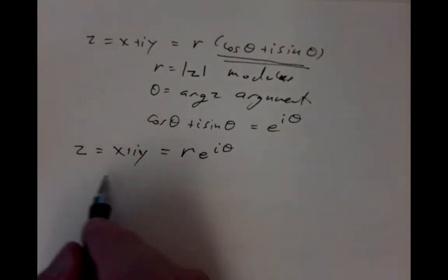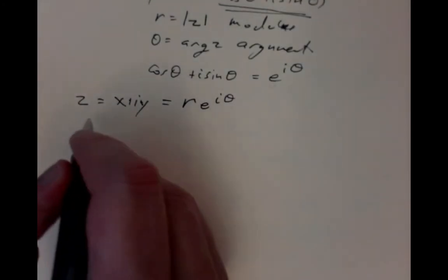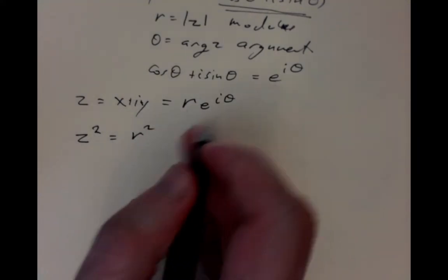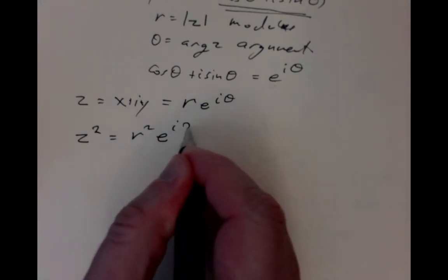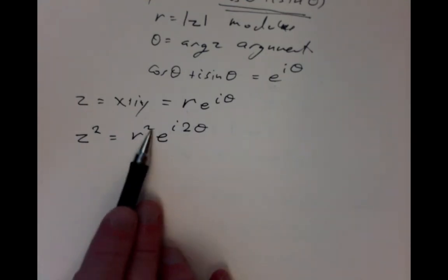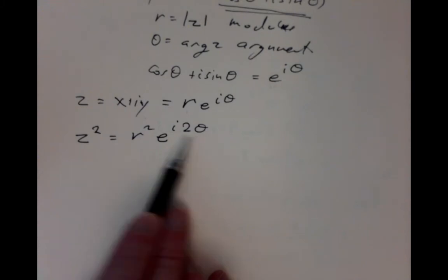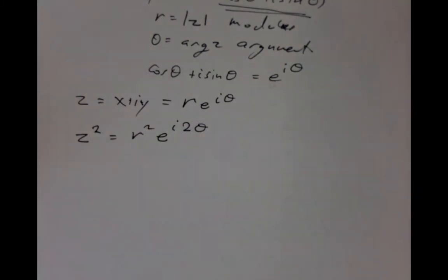We know what happens when we multiply these numbers. When you take z squared, you get two r's multiplied together, giving r squared. You get two e to the i thetas multiplied together, but the exponentials add, so you get e to the 2 theta. When you multiplied complex numbers, their moduli were multiplying and their arguments were adding.